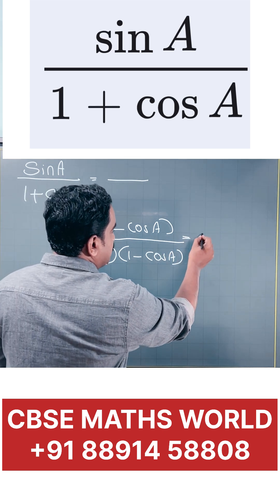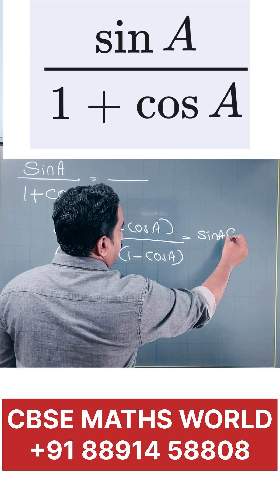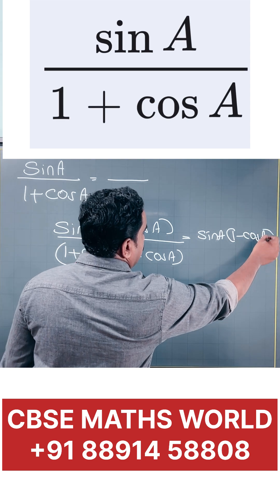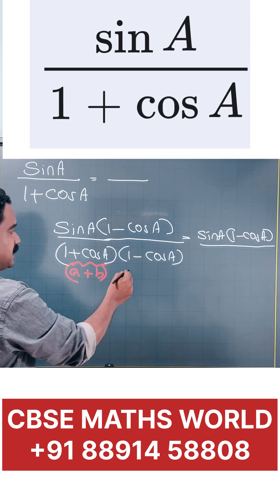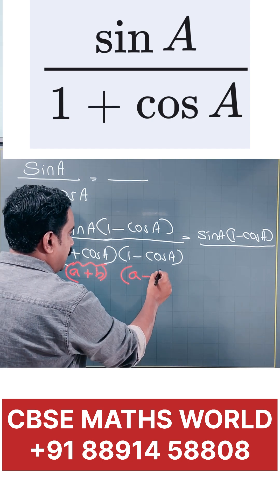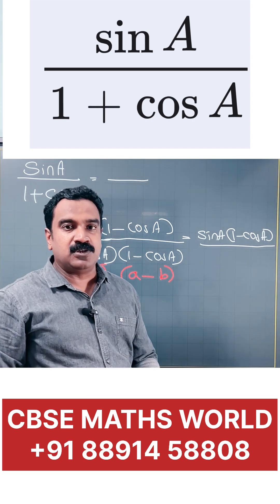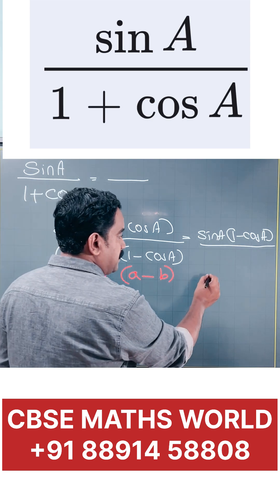The numerator is sine A into 1 minus cos A. This is the numerator. And the denominator, look at the denominator, now in the form A plus B into A minus B. What is A plus B into A minus B? A square minus B square.